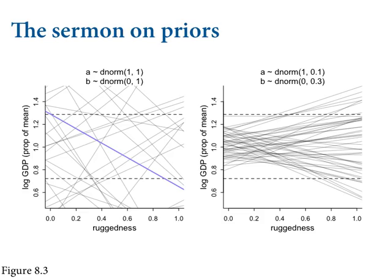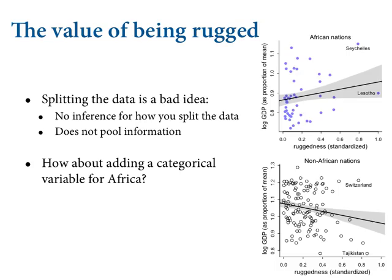Let me walk you through the models that don't work to recover this relationship. The analysis I showed you in those two plots came from splitting the data — I take the dataset and split it into African countries and non-African countries, and run two linear regressions. This is cheating. Why? Because now you have no statistical criterion upon which to evaluate the split. You want to measure the contrast in the slope between African and non-African countries, and to do that you've got to estimate both of these lines in the same model. That's what interaction effects let you do — you shouldn't split your data set; you should let the model split it and tell you how credible the split is.